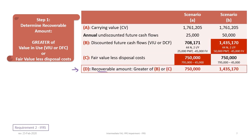Now we calculate the recoverable amount, denoted as item D. The recoverable amount is the greater of B or C — that is, the greater of the value in use or the fair value less cost to dispose. Under scenario A, the higher number is $750,000, which is the fair value less disposal costs. Under scenario B, because our cash flow payments are higher, the value in use is higher: $1,435,170 is greater than $750,000, so the recoverable amount under scenario B is $1,435,170.